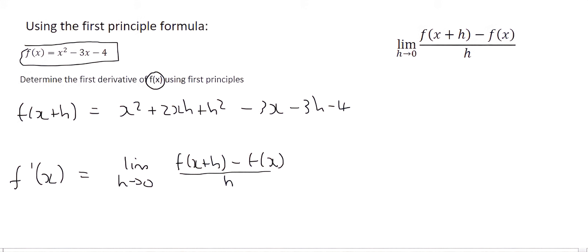And now we can fill all of this in in the place of f of x plus h. That will be x squared plus 2xh plus h squared minus 3x minus 3h minus 4. Then the formula says we should minus and then in brackets we should have f of x. Now f of x is just the original equation but it's very important that we use brackets. And now we write all of that over h.